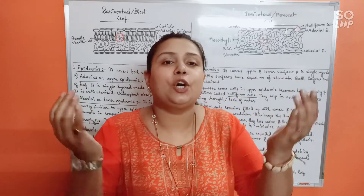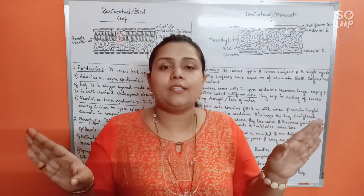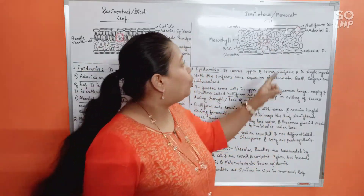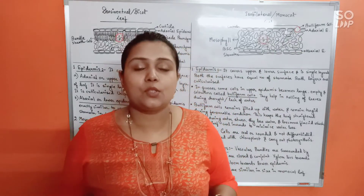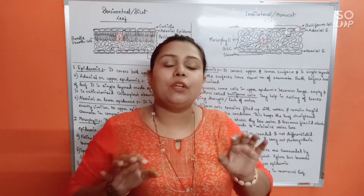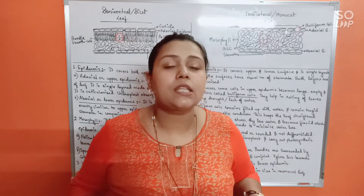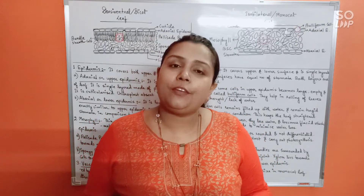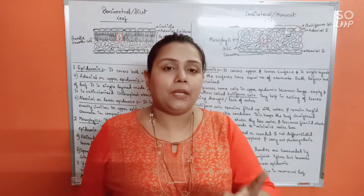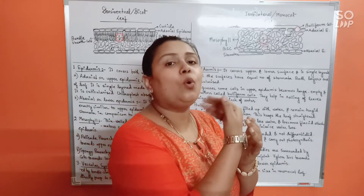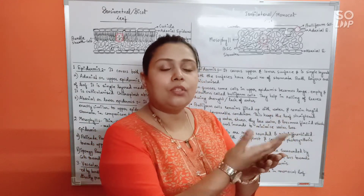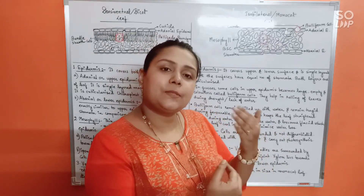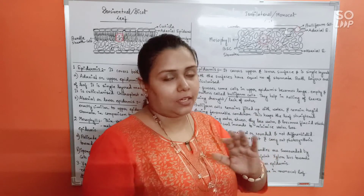The water inside the buliform cells continuously pressurizes the outer walls, keeping the cells turgid. When the buliform cells are turgid, the leaf remains straightened and open, allowing the stomata to lose water as vapor — so transpiration keeps happening and water loss continues.